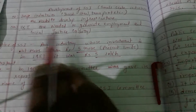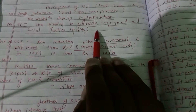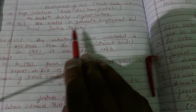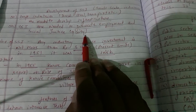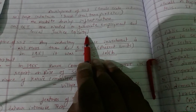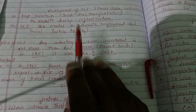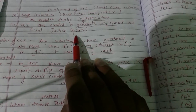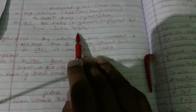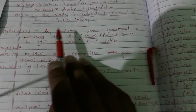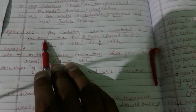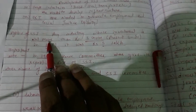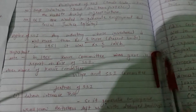While small scale industries are needed for employment generation and social justice — which we can also call equity. So small scale industries are required for employment generation and equity. Now if we want to define SSI, through the MSMED Act we get to know the limits of all three major industries — small, medium, and large scale.